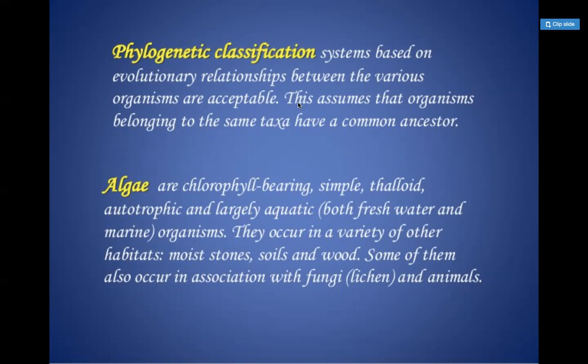In this lecture, we'll talk about the general characteristics of algae or Thallophyta. Thallophyta are aquatic plants — they are found in fresh water as well as marine water. A most common characteristic is they have a thallus that can grow in any habitat. They might be growing in aquatic conditions or in moist soil, moist stone, or wood.